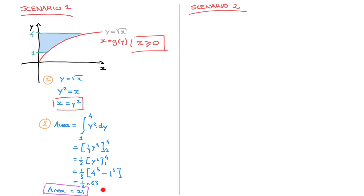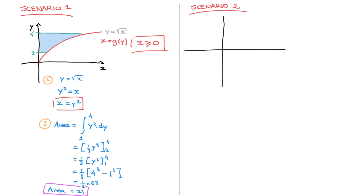That was the first scenario, in which all of the x coordinates along the curve were greater than or equal to zero, and all we had to do was calculate the definite integral of g of y — which turned out to be y squared — between y equals one and y equals four. Now let's look at the second scenario. I'll consider a second function and draw a new x-y grid.